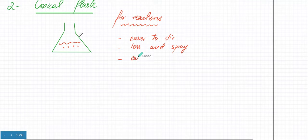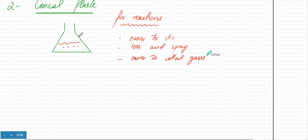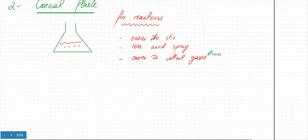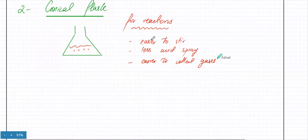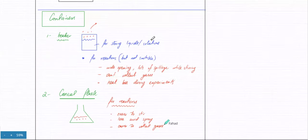You can collect gas from a conical flask by putting a balloon over the small opening. Every time you're doing a reaction, you're going to use a conical flask — it has clear advantages compared to a beaker.